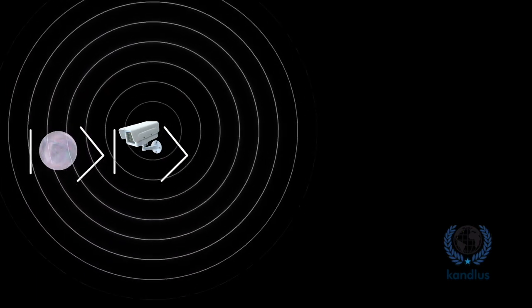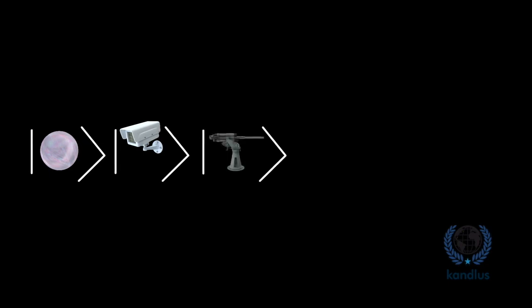There is a sensor next to the electron that clicks if the electron rotates clockwise and does nothing if it rotates counterclockwise. If this sensor clicks, it sends a signal to a gun, which then fires and kills a cat in front of it.